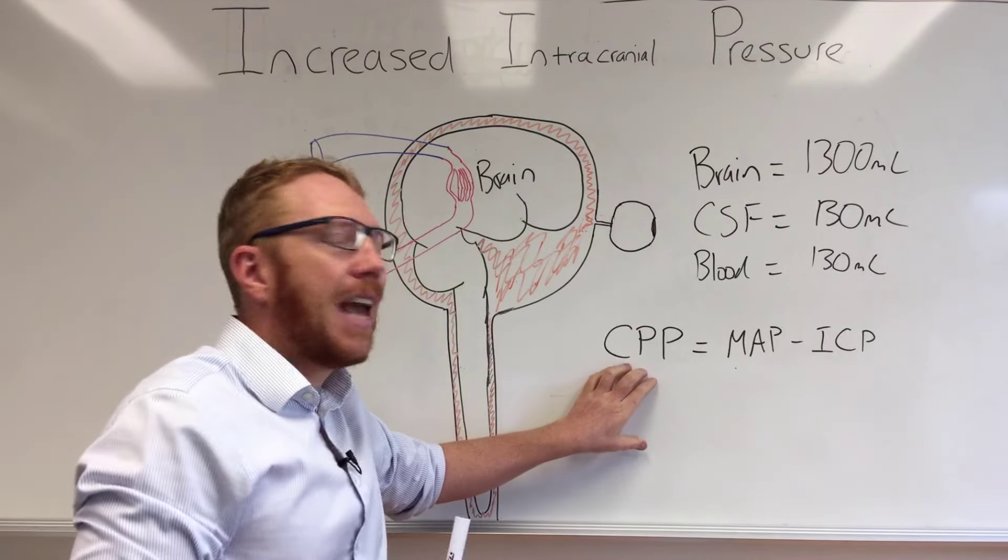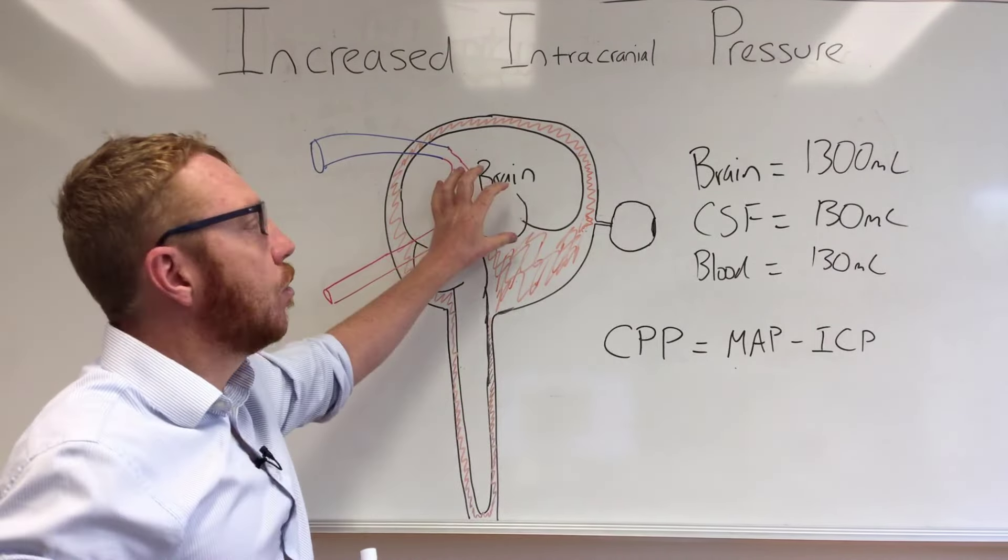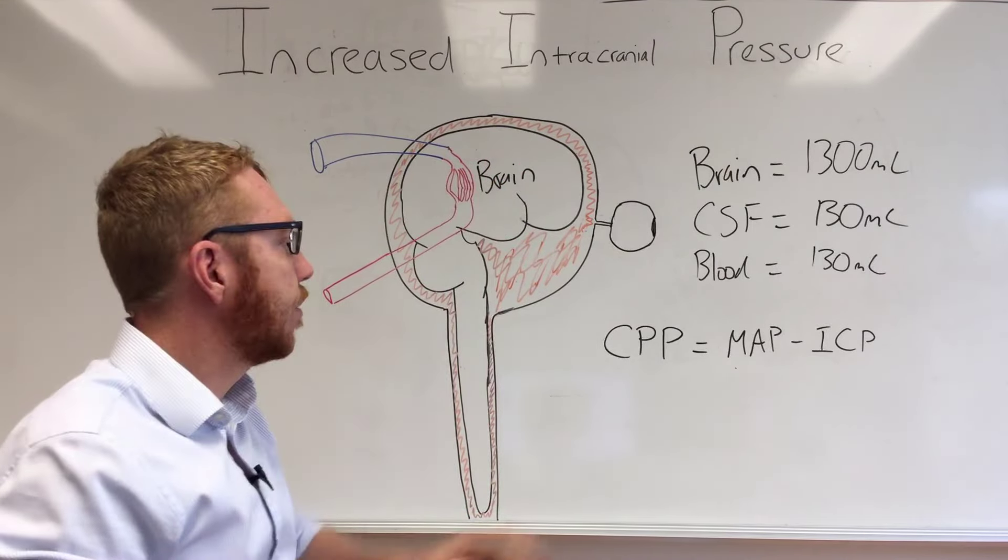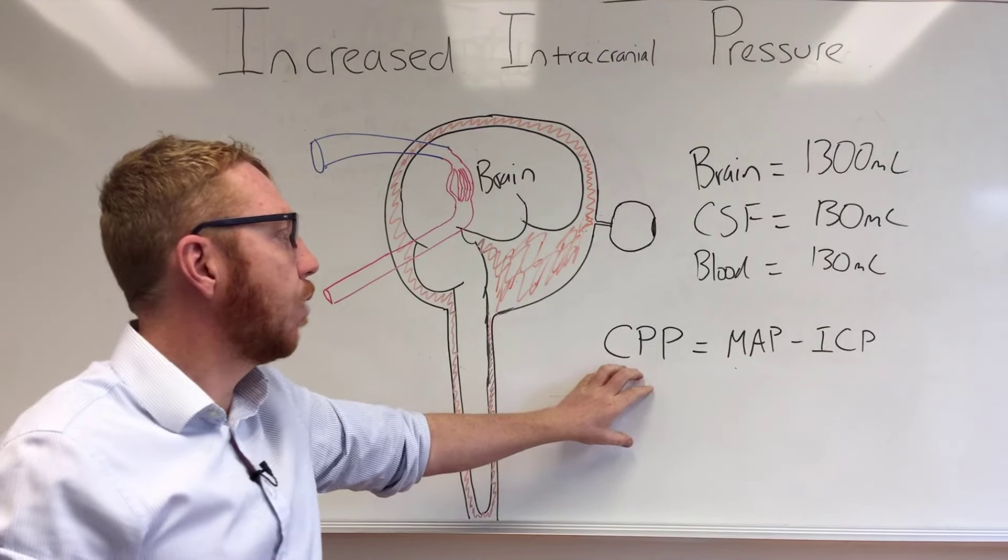The CPP has to be in a certain range to give your neurons and cells in your brain enough oxygen and nutrients to survive. So this has to be maintained at a certain rate.